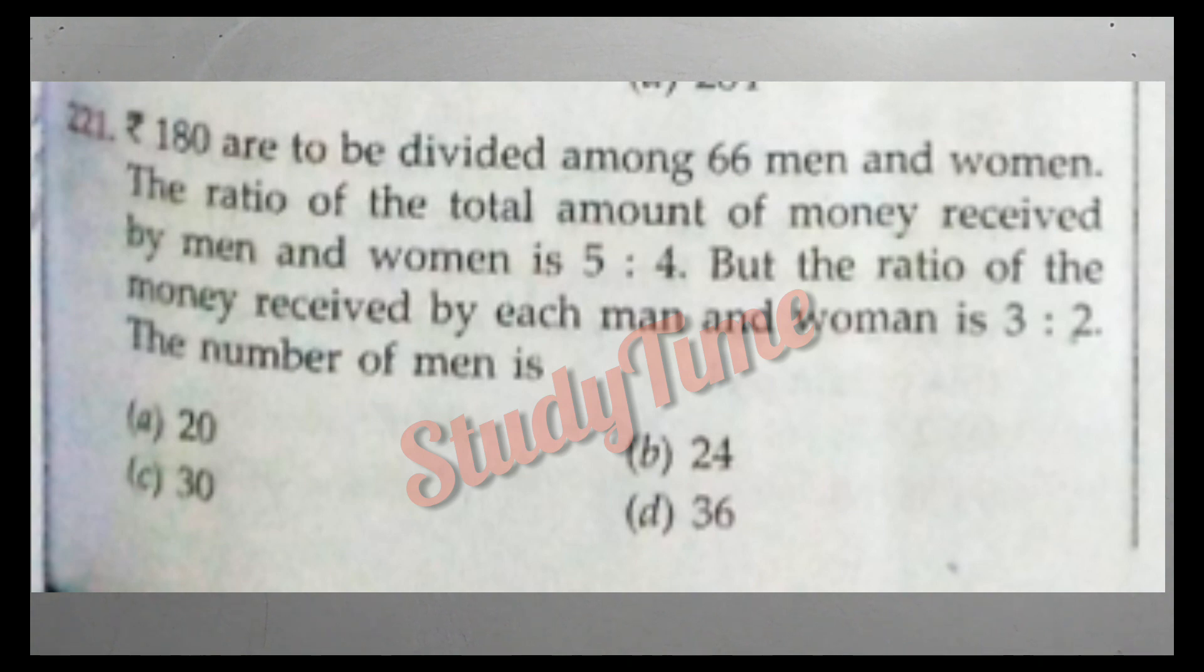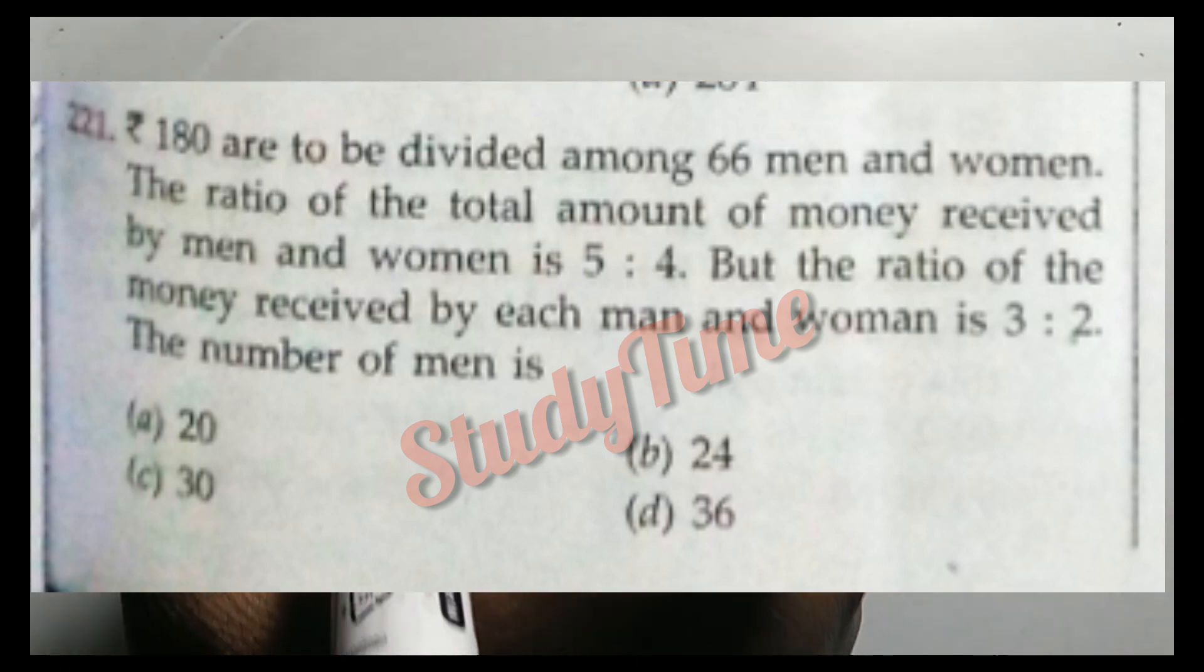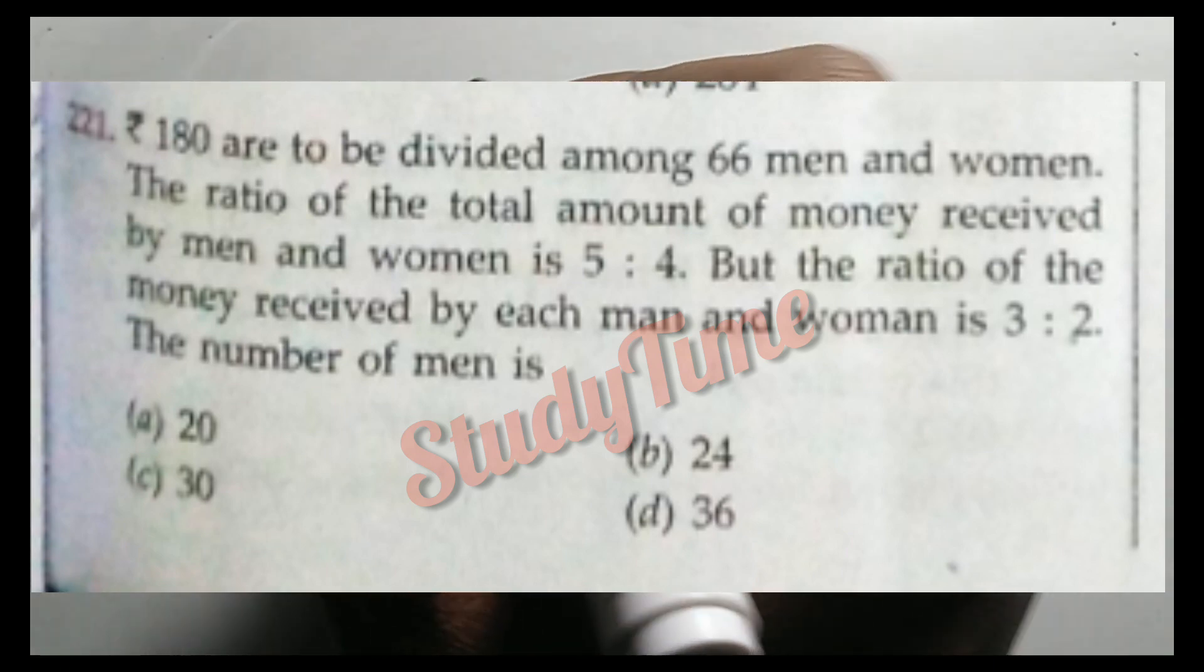The ratio of the total amount of money received by men and women is 5 to 4. The ratio of the money received by each man and woman is 3 to 2.